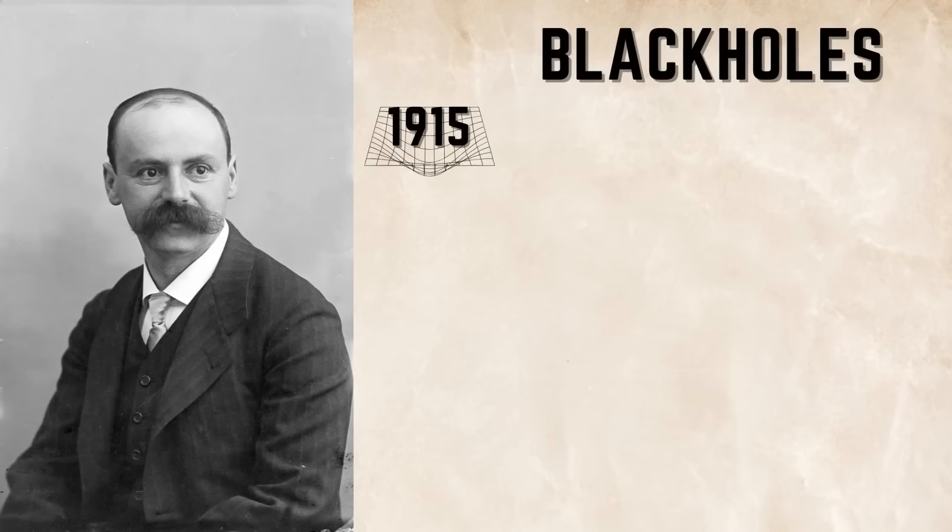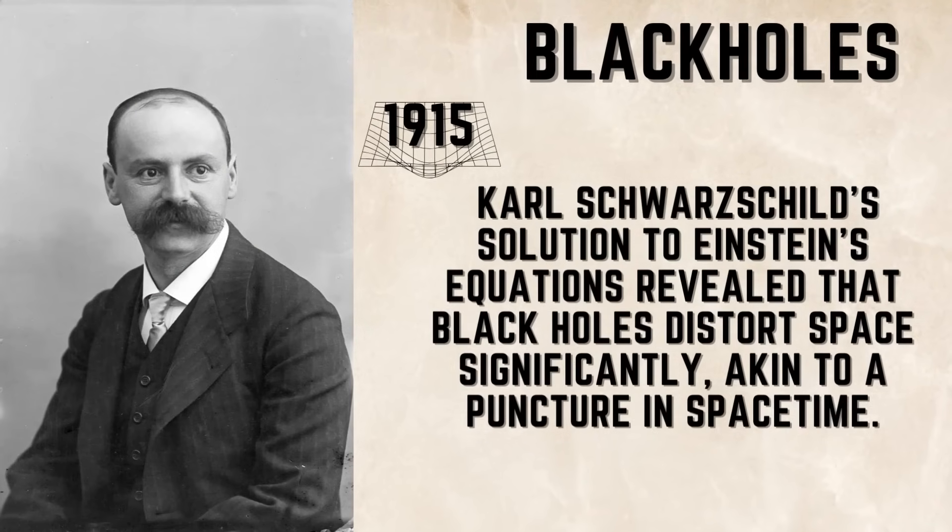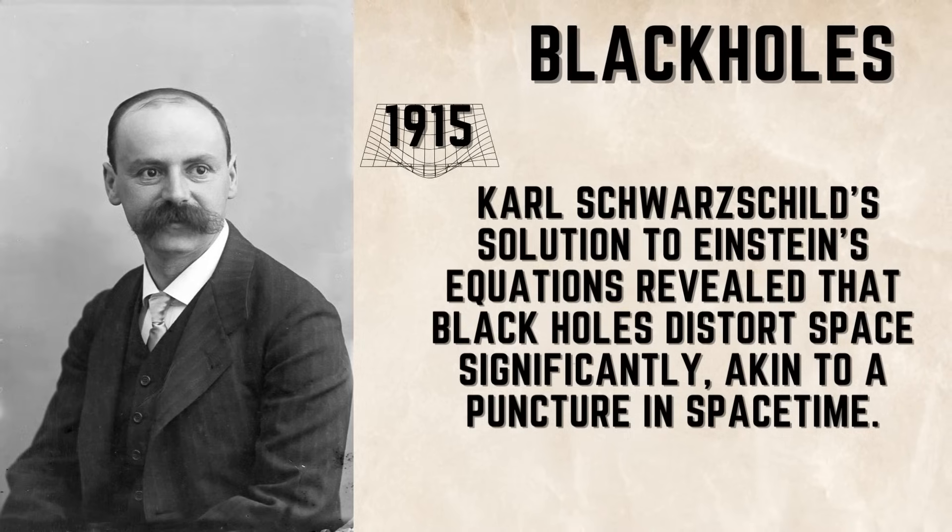In 1915, Carl Schwarzschild solved Einstein's formulas and found that black holes severely distort space, like a puncture in space-time itself.